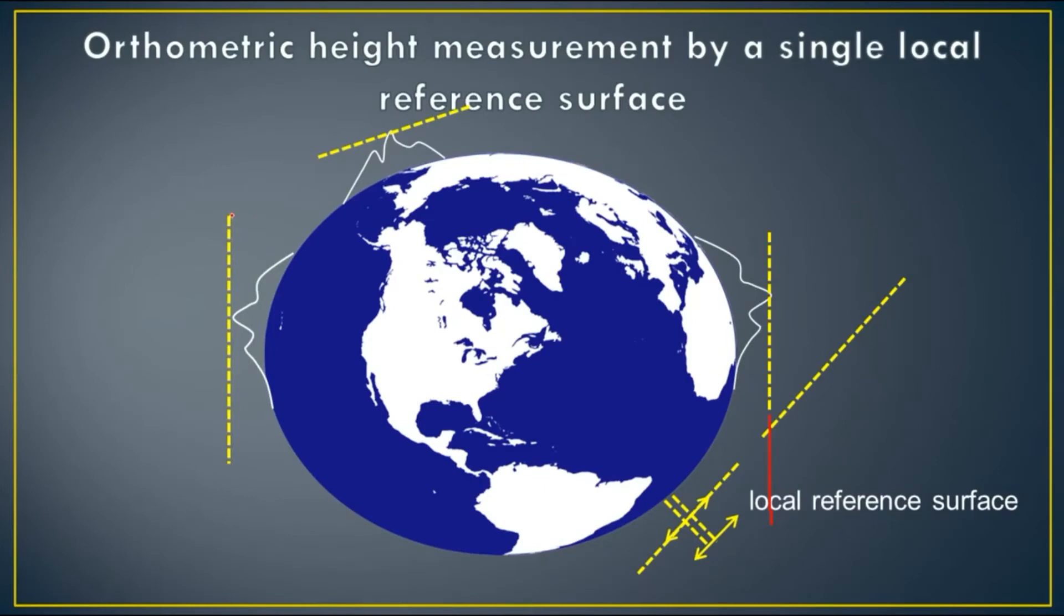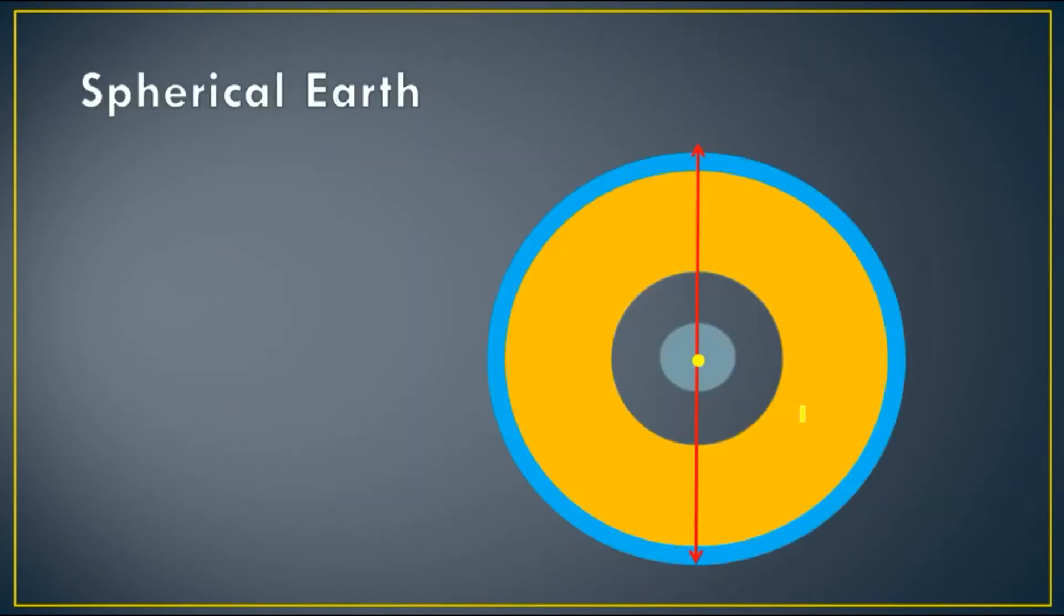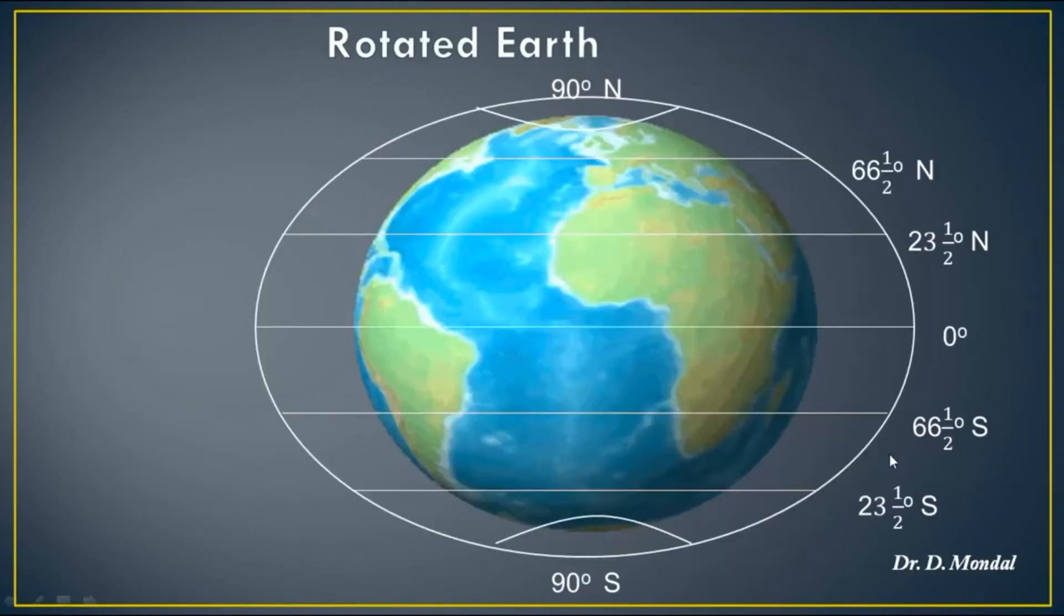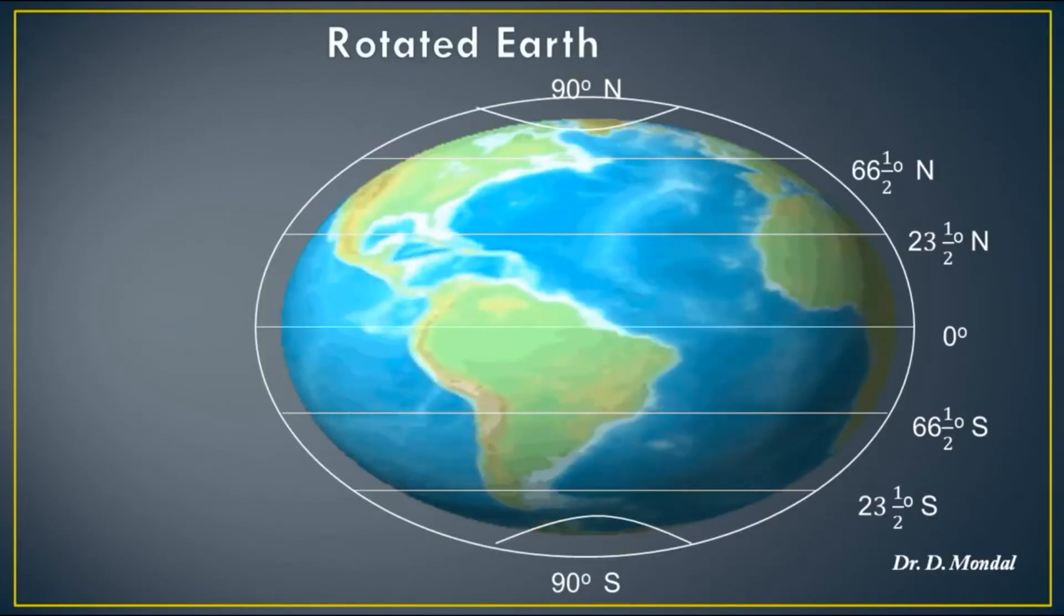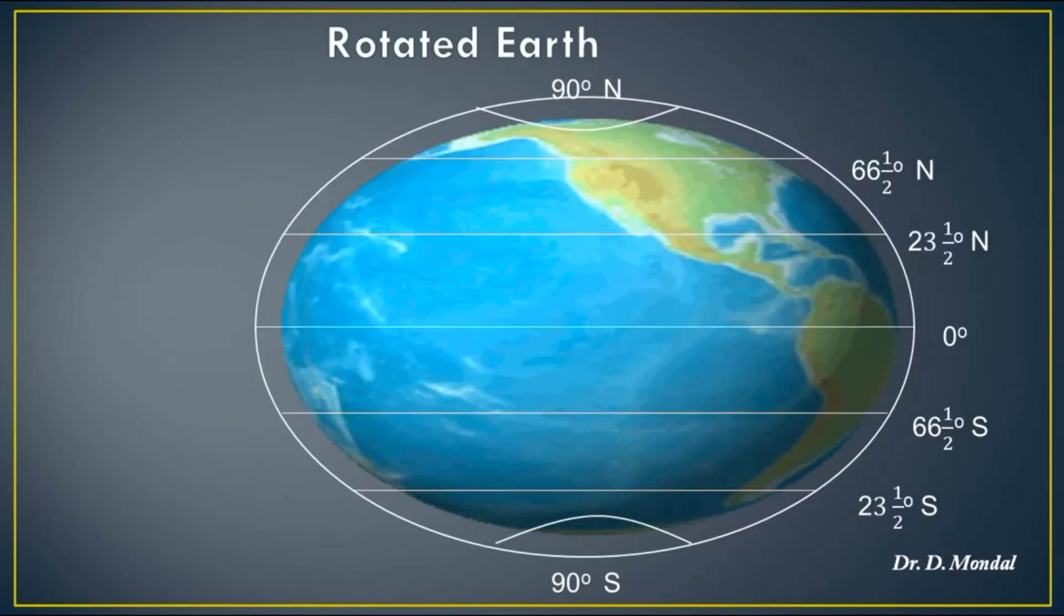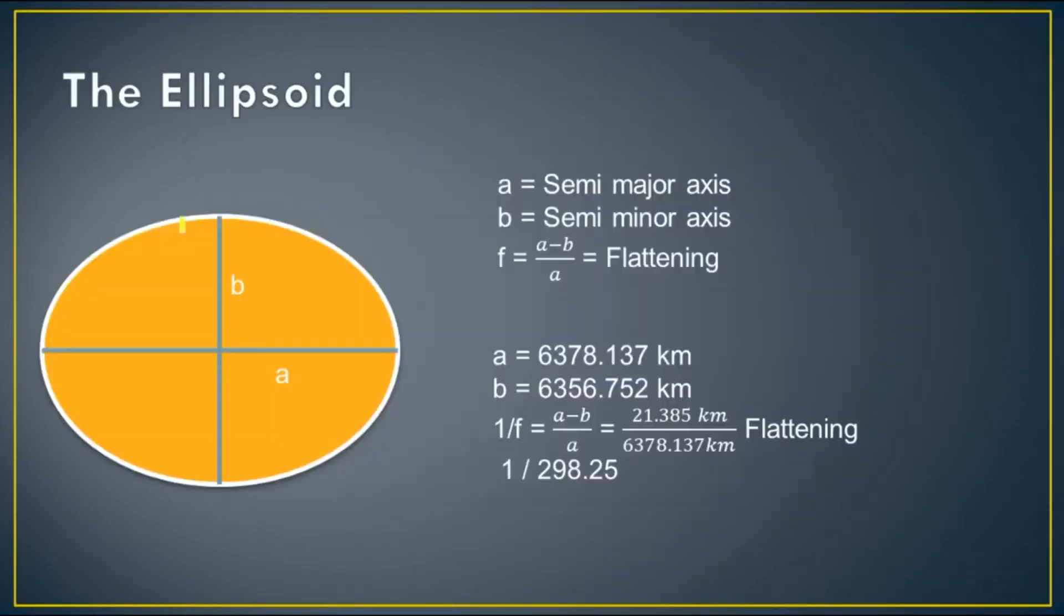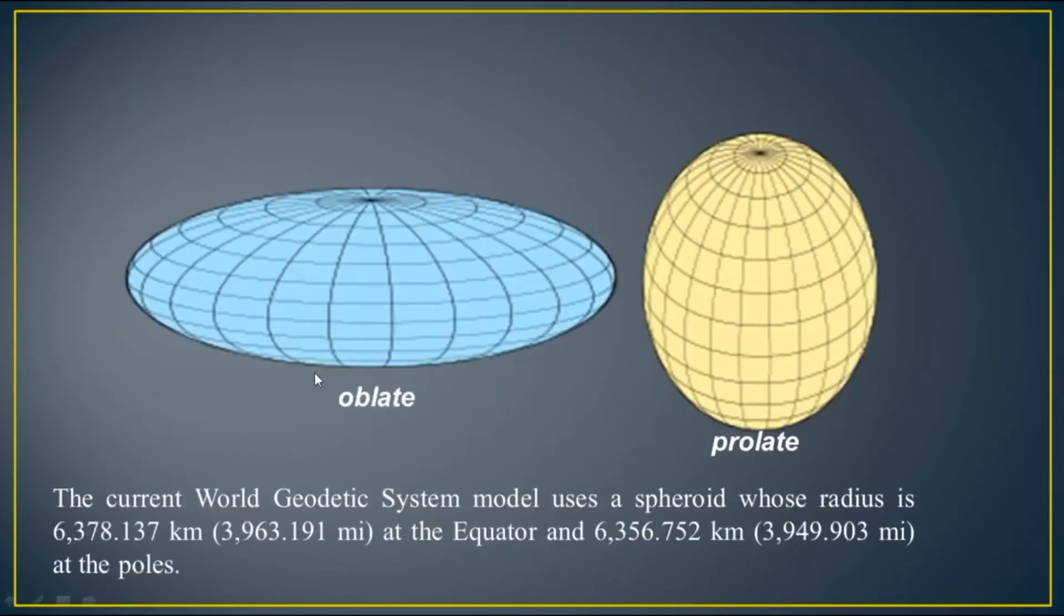It is very easy to calculate the height of any point on the earth's surface in the spherical earth model. But as we know, the shape of the earth is not perfectly spherical; rather it is expanded in the equatorial zone due to centrifugal force produced by rotational velocity. As a result, the equatorial radius is greater than polar radius, and such kind of shape is called oblate shape.